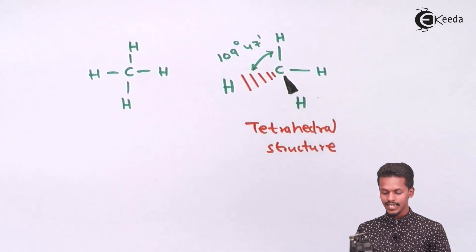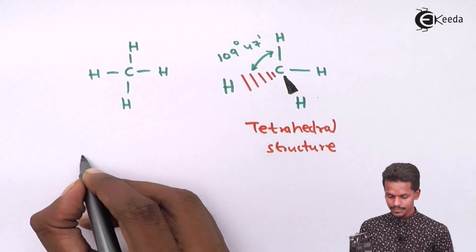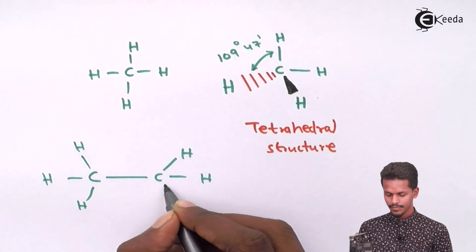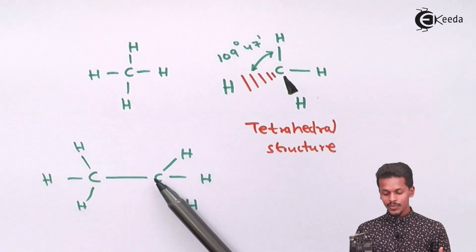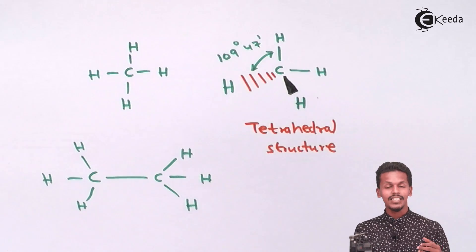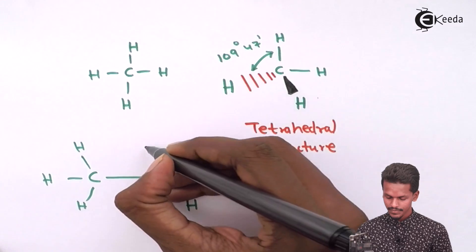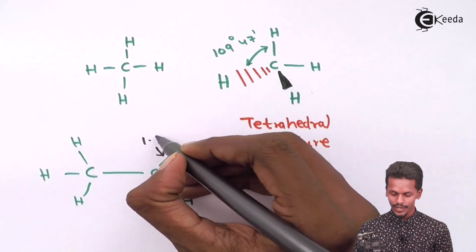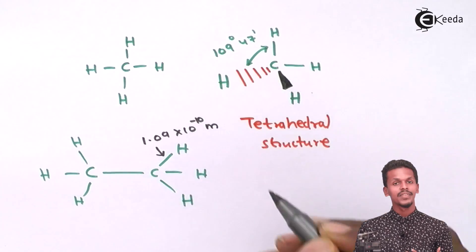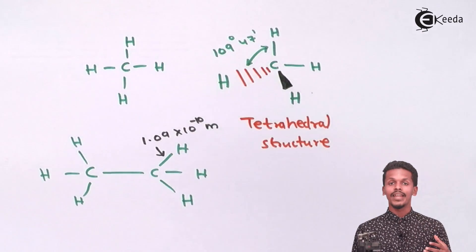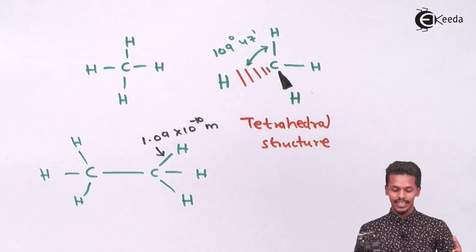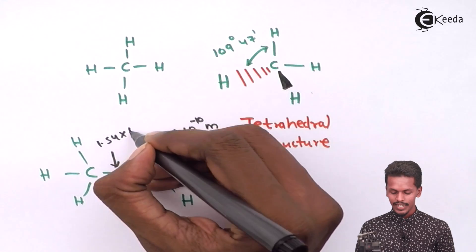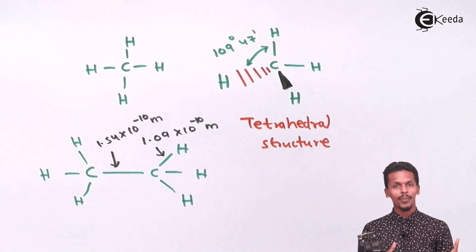Regarding bond lengths in alkanes: the bond length between carbon and hydrogen is 1.09 × 10⁻¹⁰ m, while the bond length between carbon and carbon is 1.54 × 10⁻¹⁰ m.